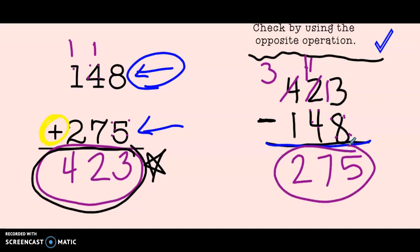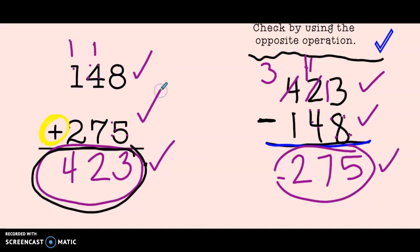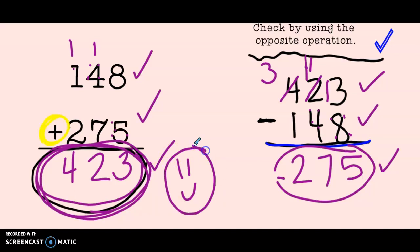Wait a minute. Look at our problem that we did. That was the third number, 275. That means that even when I went and subtracted, I still got the same three numbers. I got 423, 148, and 275. That means that my answer of 423 was correct. I checked my work by using the opposite operation.